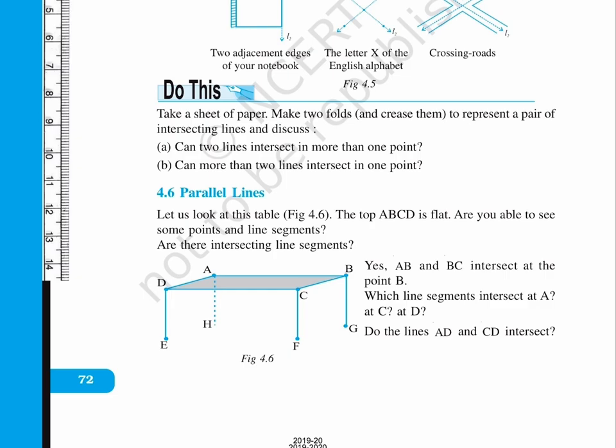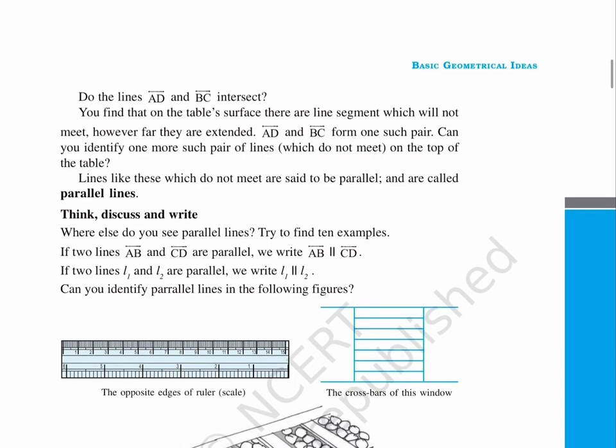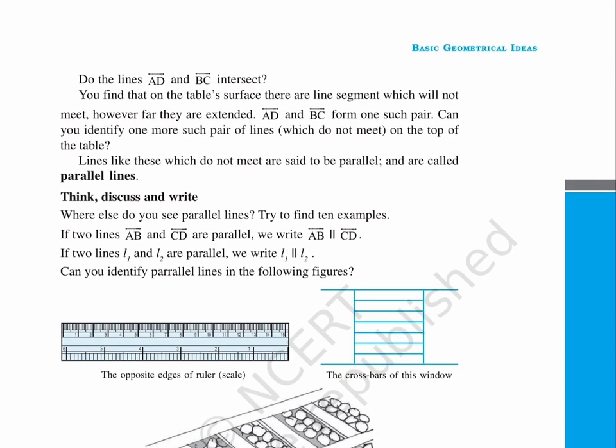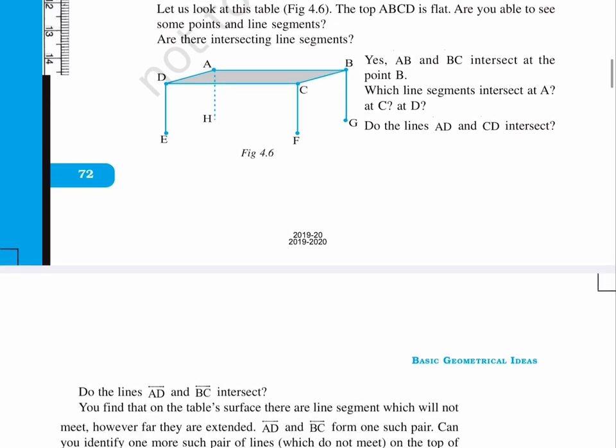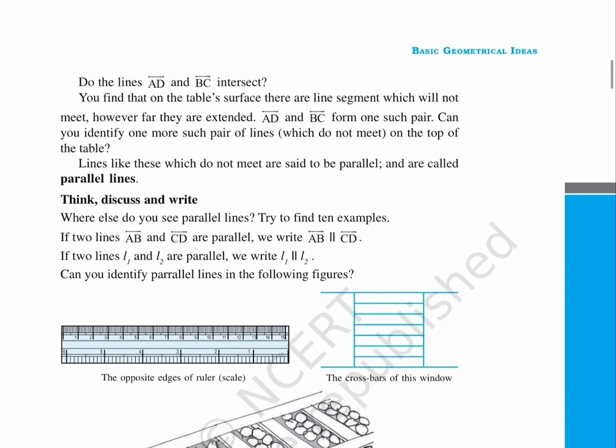Page 73. Do the lines AD and BC intersect? You find that on the table's surface there are line segments which will not meet, however far they are extended. AD and BC form one such pair.